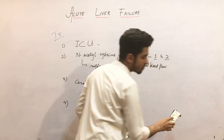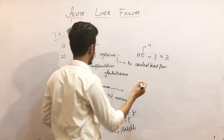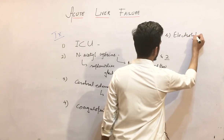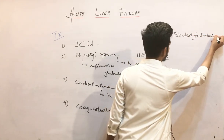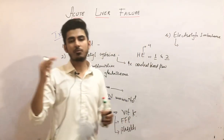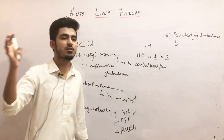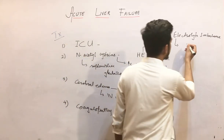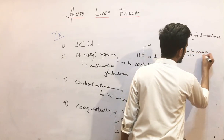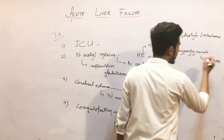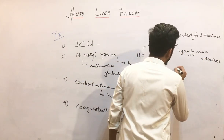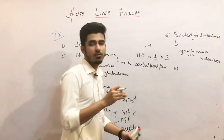The fifth point is electrolyte imbalance. How do you treat electrolyte imbalance? Simply treat the hypomagnesemia and hypophosphatemia accordingly, and treat hypoglycemia in the patient by giving dextrose.